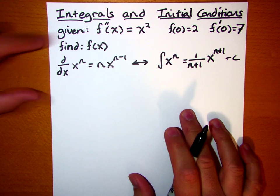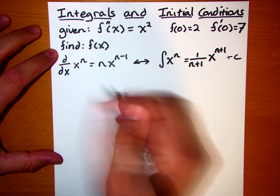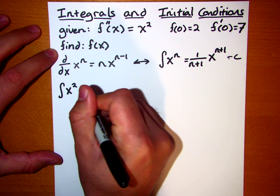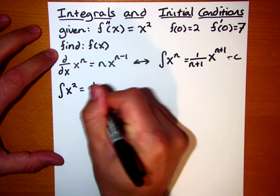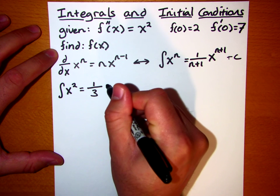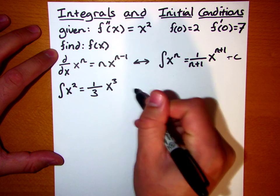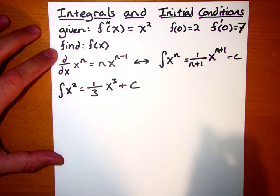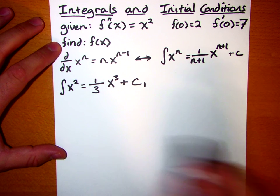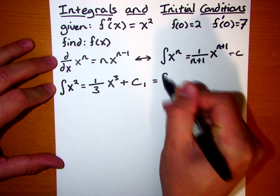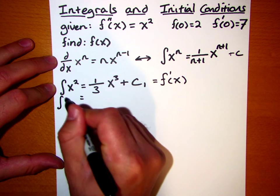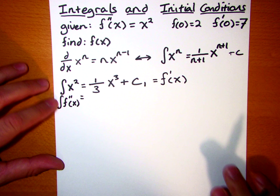Alright, so given that, let's take a look at our equation here. f double prime of x equals x squared. Let's just go ahead and integrate that. So the integral of x squared is going to be equal to 1 over n plus 1, which in this case is 2 plus 1, which is 3. So 1 over 3 times x to the third plus c. And I'm actually going to call this c1, and you'll see why in just a minute here, because you always want to add that constant. Remember, this is the integral of f double prime, so this should give us f prime of x.